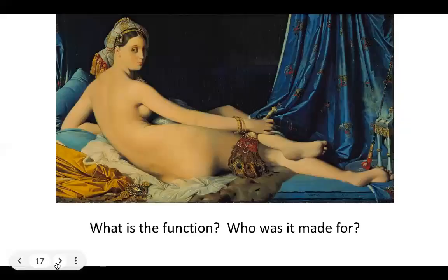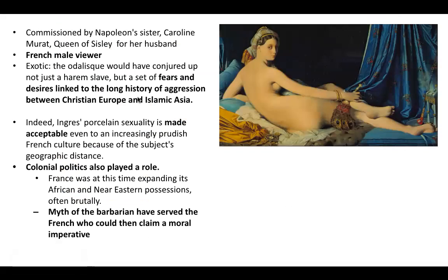Thinking about the function of this reclining nude, we need to consider who it was made for. It was made for the husband of Napoleon's sister, who was Queen of Sicily. This is very similar to Titian's Venus of Urbino — it's there for the male gaze, an image of a nude in the classical tradition, but with the essence of the exotic. An odalisque would be a woman of a harem or a harem slave. The French would see this as both exotic and as a fear of the unknown — fear of people different from themselves, perhaps anti-Islam or anti-Asian sentiment, typical of colonialism.